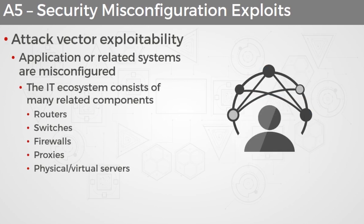When we talk about security misconfiguration, we're really talking about security settings being configured at some level, but perhaps not correctly. So we could have applications or related underlying systems that are not configured in a secured manner. Our web app has an entire ecosystem that it depends on, which would consist of items like routers, switches, firewall appliances, proxies, and physical and virtual servers.